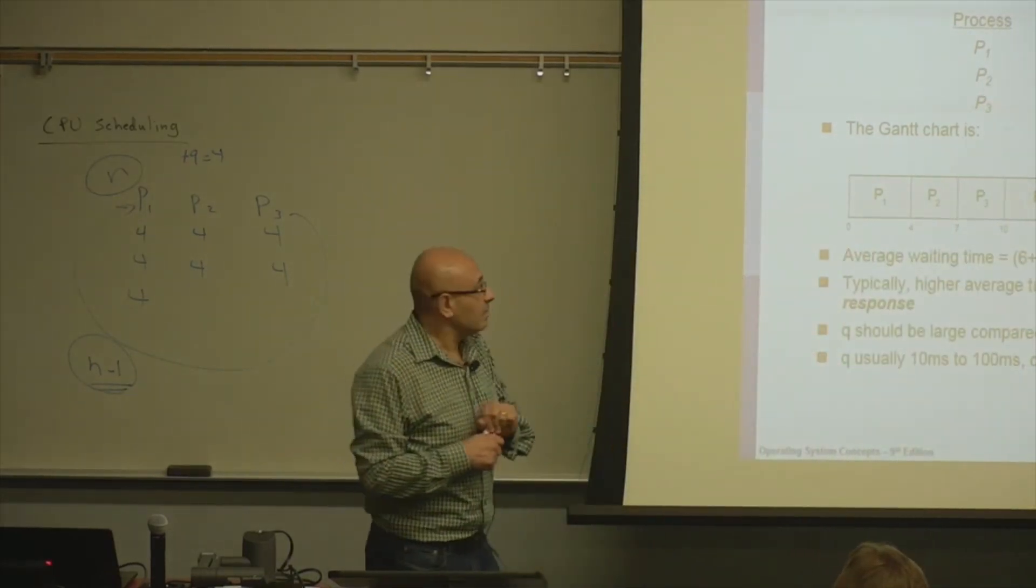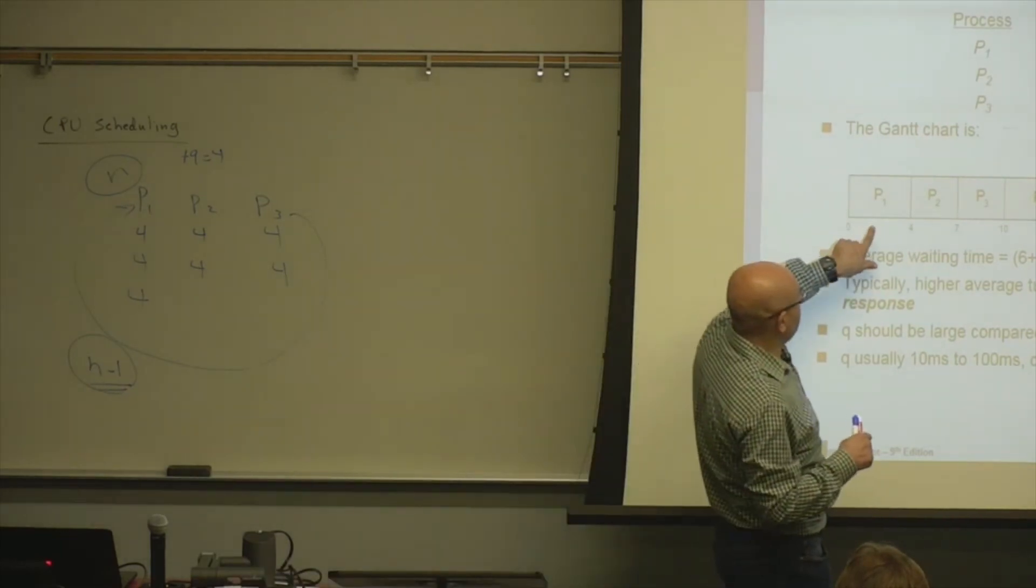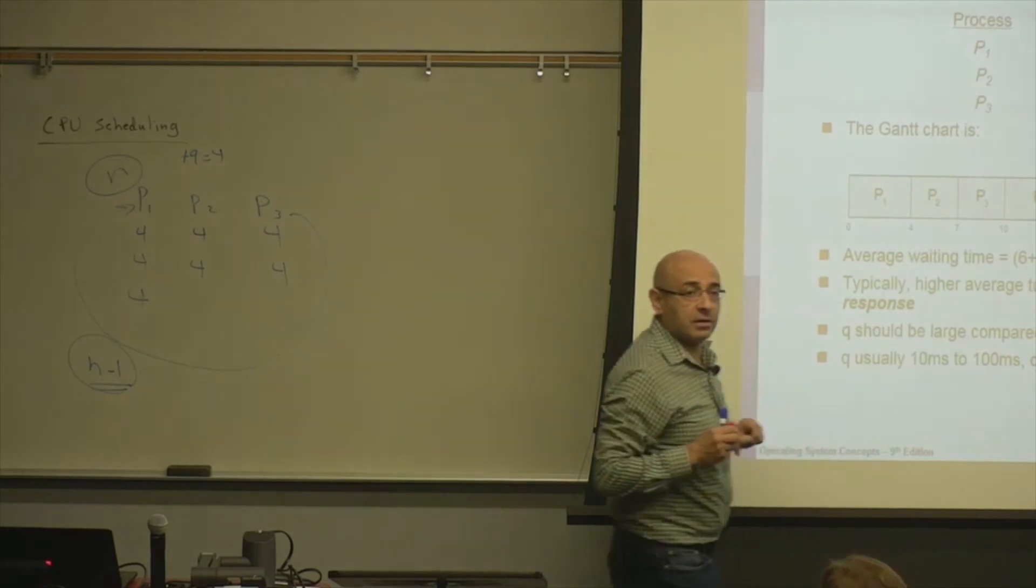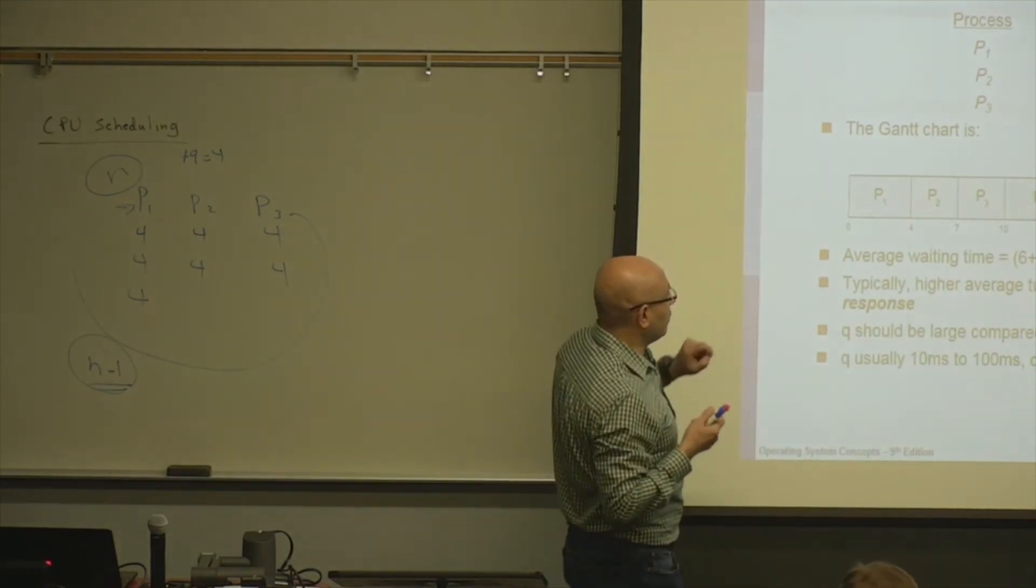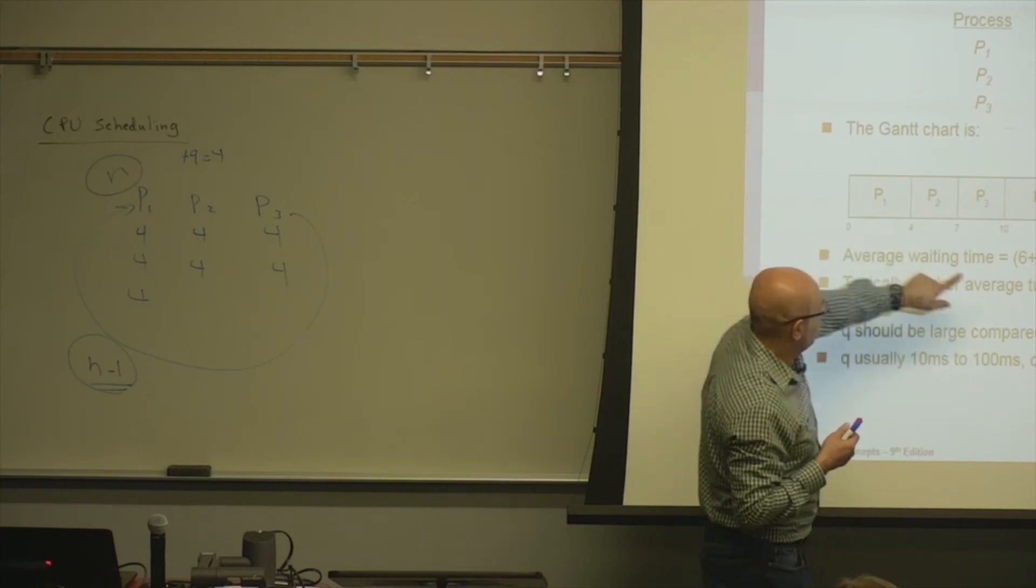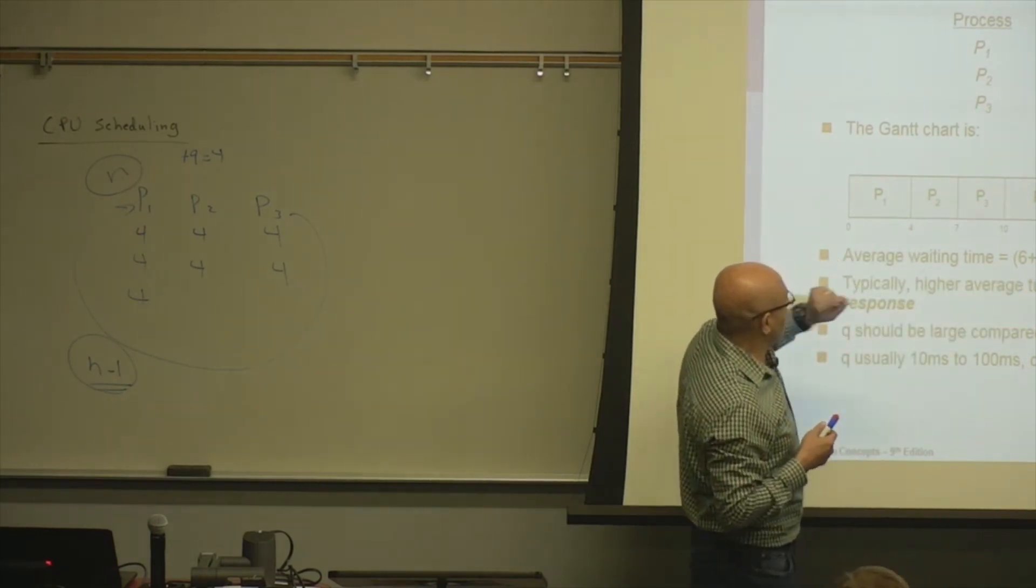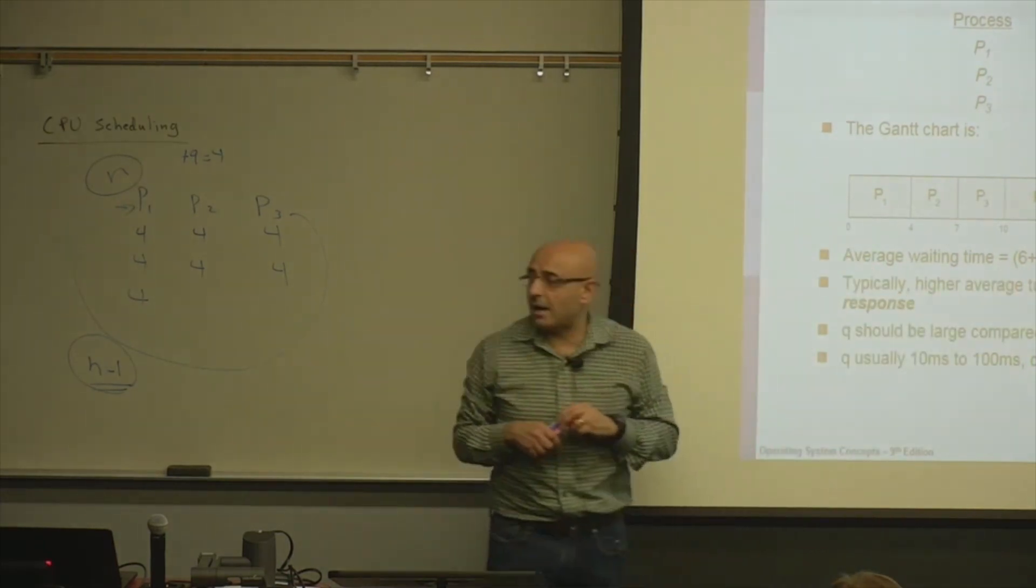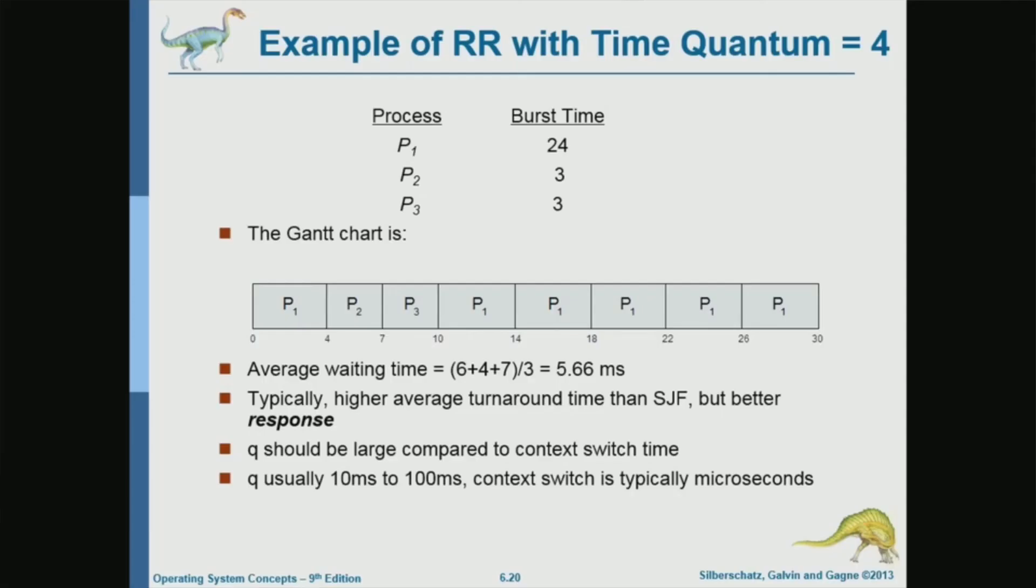Now, what are the waiting times? The waiting time for P1 is the time it spent in the ready queue, which is 10 minus 4, right? So 10 minus 4 is the waiting time for P1. What's the waiting time for P2? Four. What's the waiting time for P3? Seven. So 6 plus 4 plus 7, this gives us the average waiting time in this case.